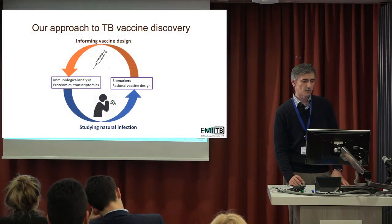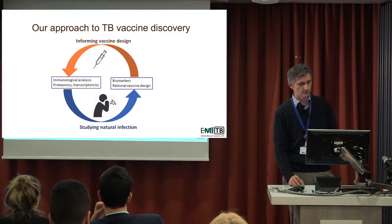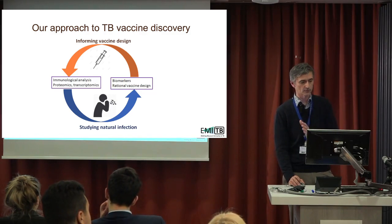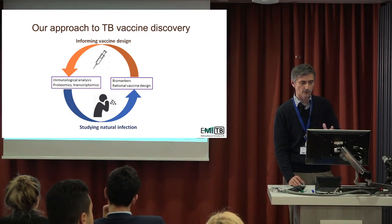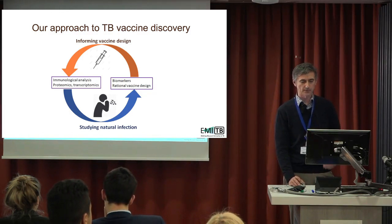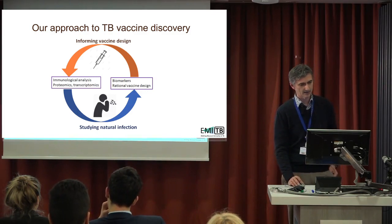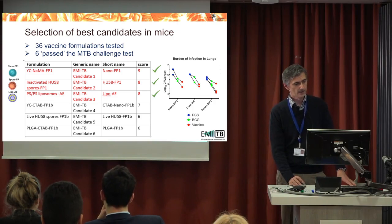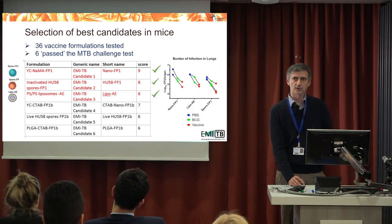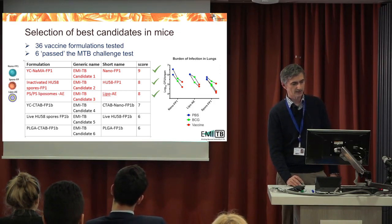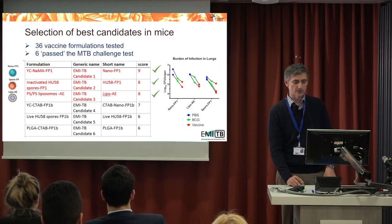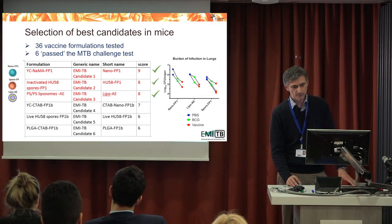Our main approach combines knowledge from natural infection. We run clinical cohorts in Africa and Europe, studying TB cases, contacts, and uninfected controls. We then apply that knowledge to our vaccine design and animal experimental testing. Starting from a very broad base, we tested 36 different vaccine formulations, selected those passing our stringent scoring criteria, and then selected three candidates that were consistently performing best.